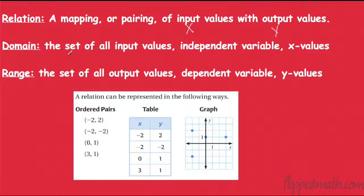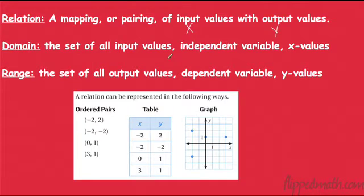A domain. Domain is a set of all input values — the independent variables, also known as the x value. So if I looked at a graph, the domain would be any possible x.